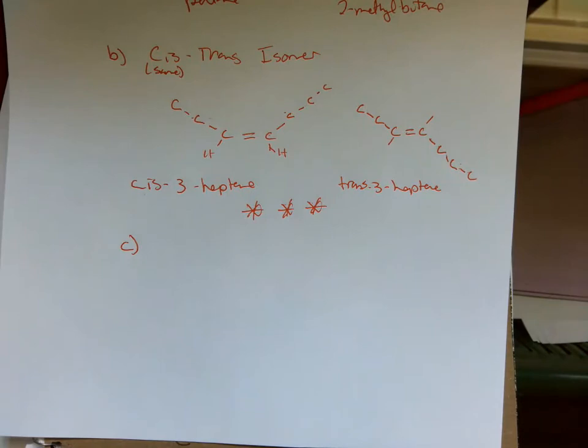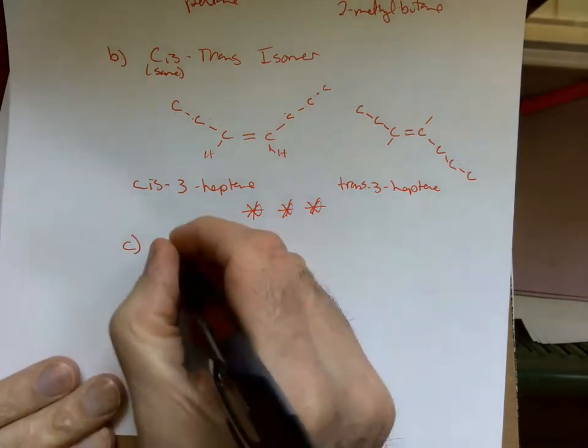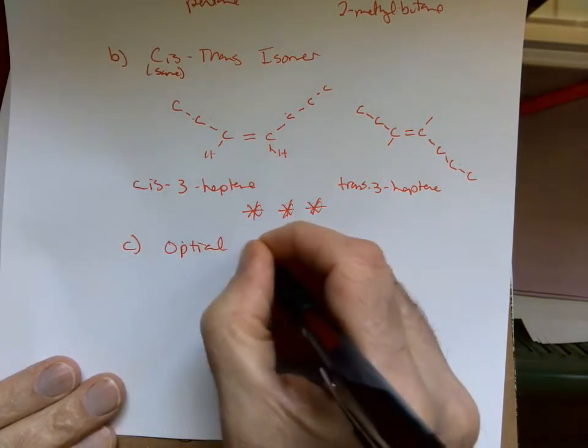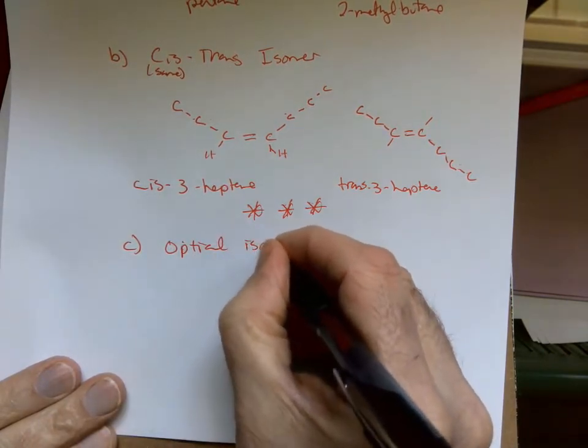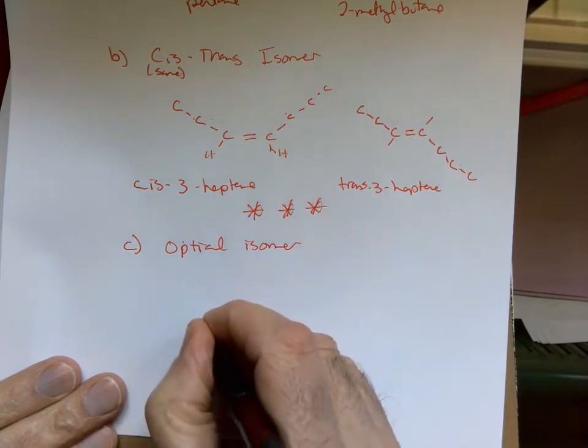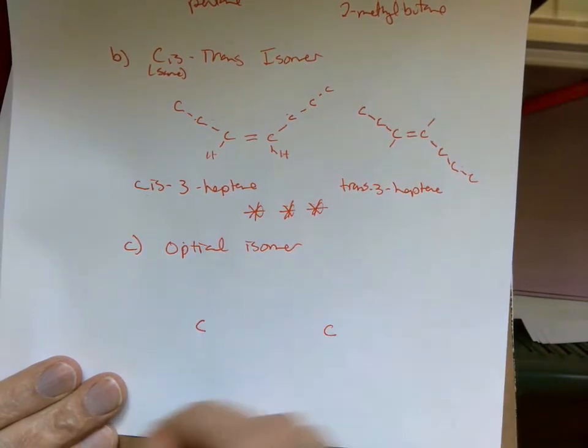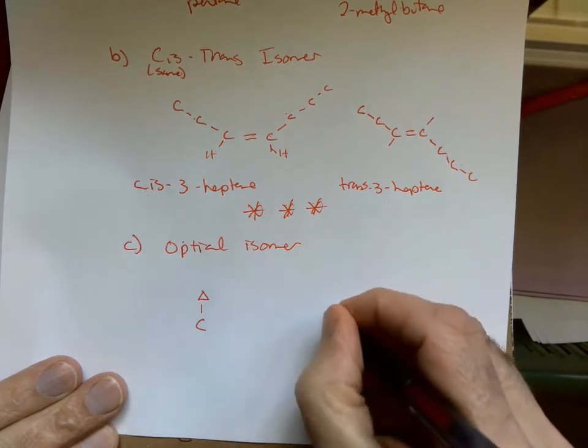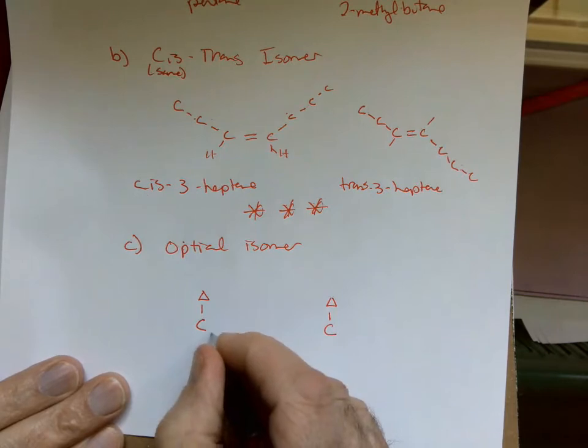The last type of isomer I'm going to talk about very quickly is an optical isomer. An optical isomer is going to be around carbon and it's a mirror structure. I'm just drawing a cartoon to show you what I mean by a mirror structure.